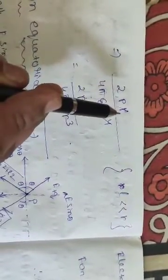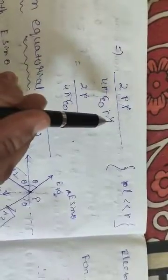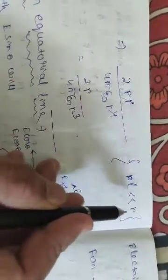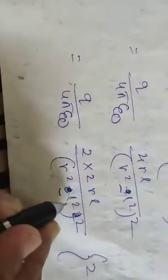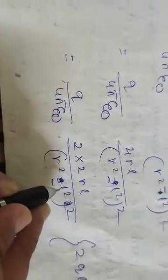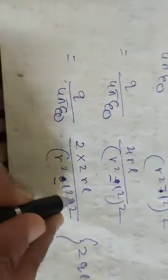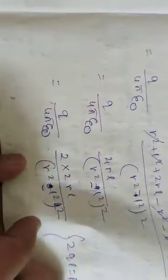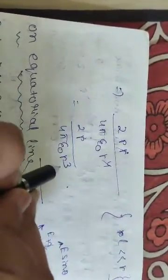We get the answer as E = 2PR / [4πε₀(R²−L²)²]. Since L is much less than R, we can neglect L. So R²−L² becomes R², and its square becomes R⁴. The 4 and R cancel, giving the final answer: E = 2P / (4πε₀R³). This is the electric field at a point on the axial line due to a dipole.